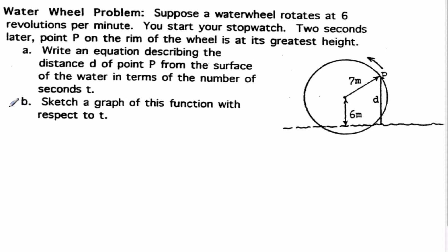Hello, this is Mr. Cole and here we have a modeling problem involving a waterwheel. It says suppose a waterwheel rotates at six revolutions per minute. We start our stopwatch two seconds later. Point P on the rim of the wheel is at its greatest height. Write an equation describing distance d of point P on the surface of the water in terms of the number of seconds t.